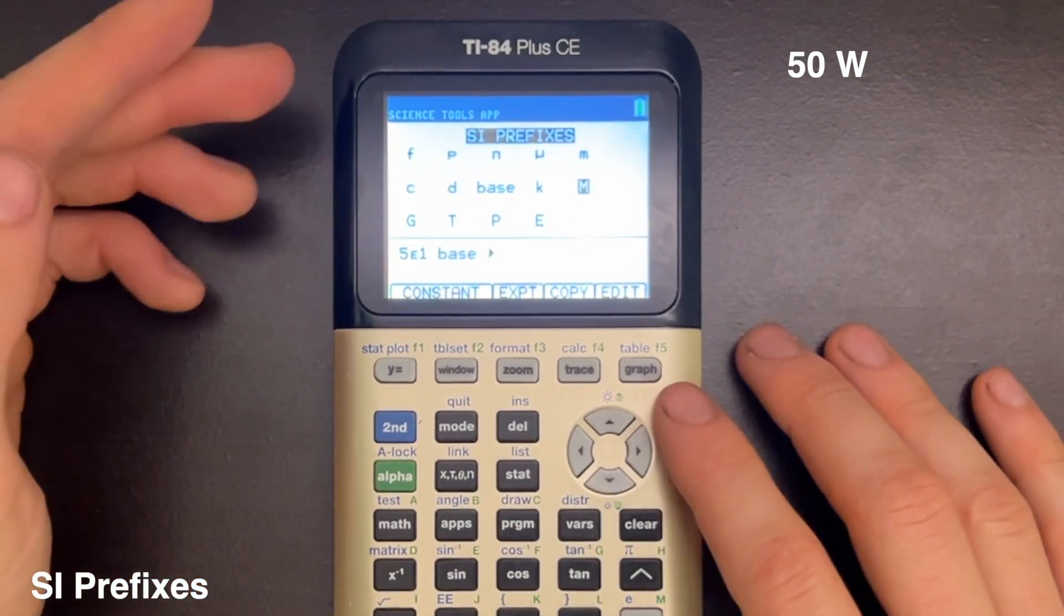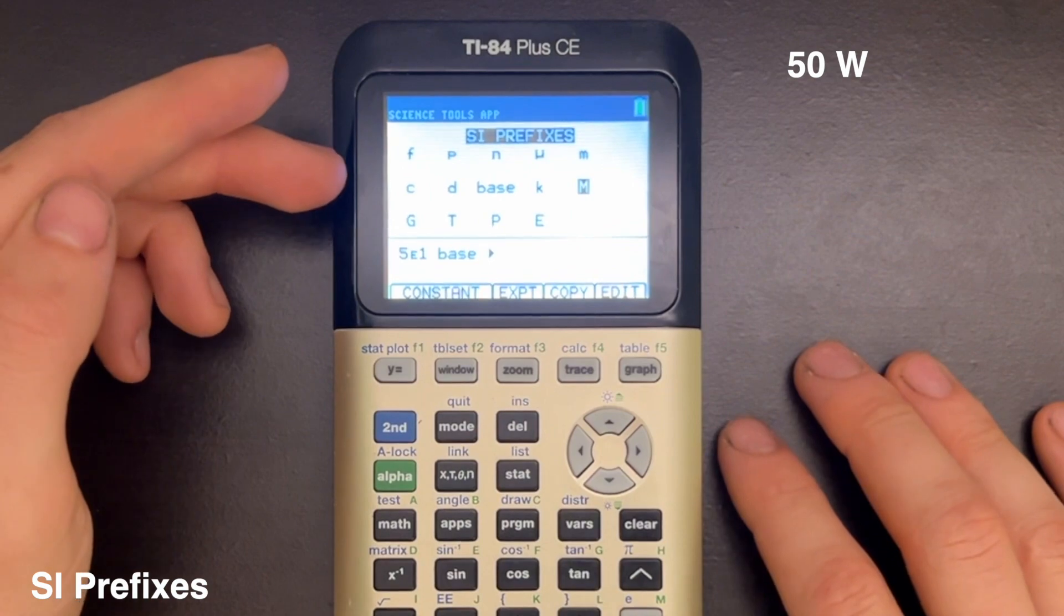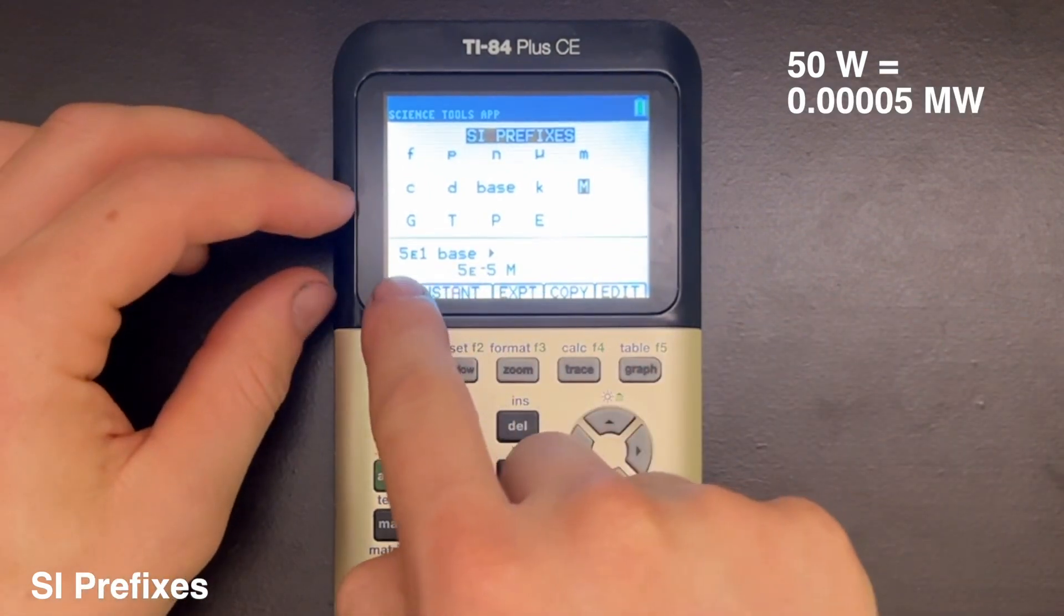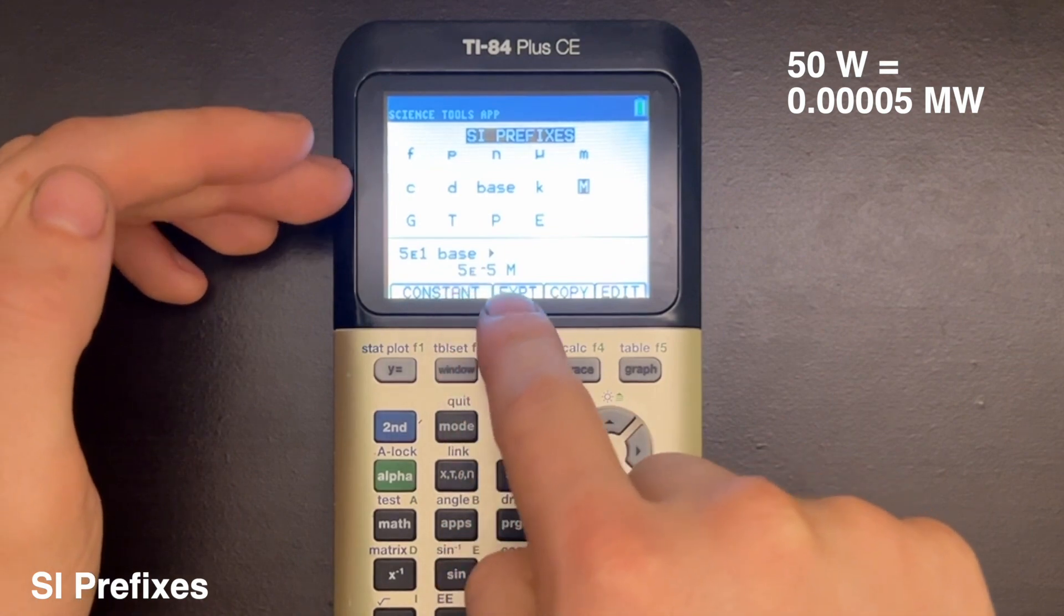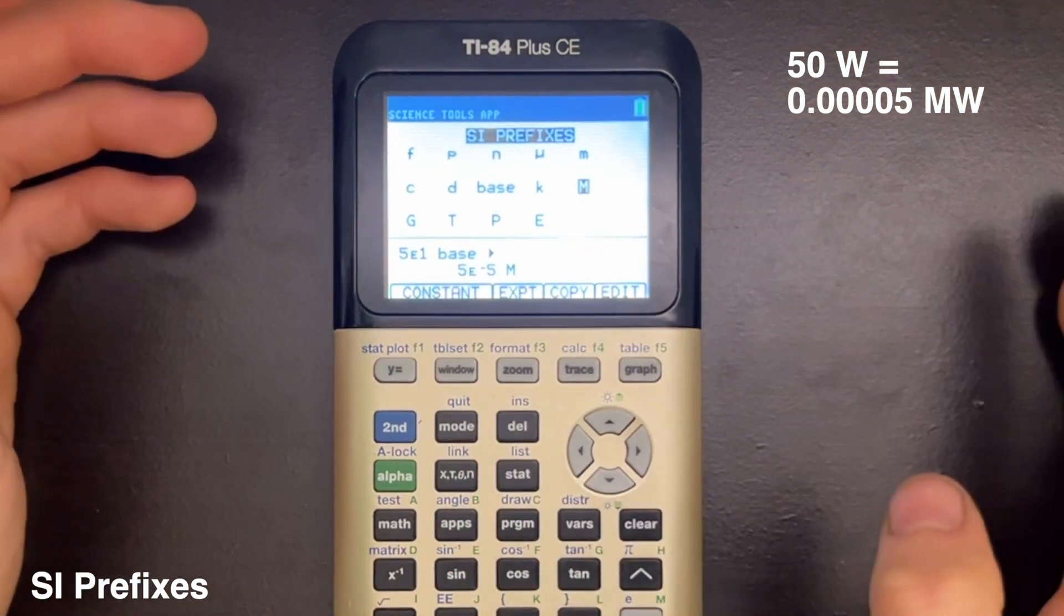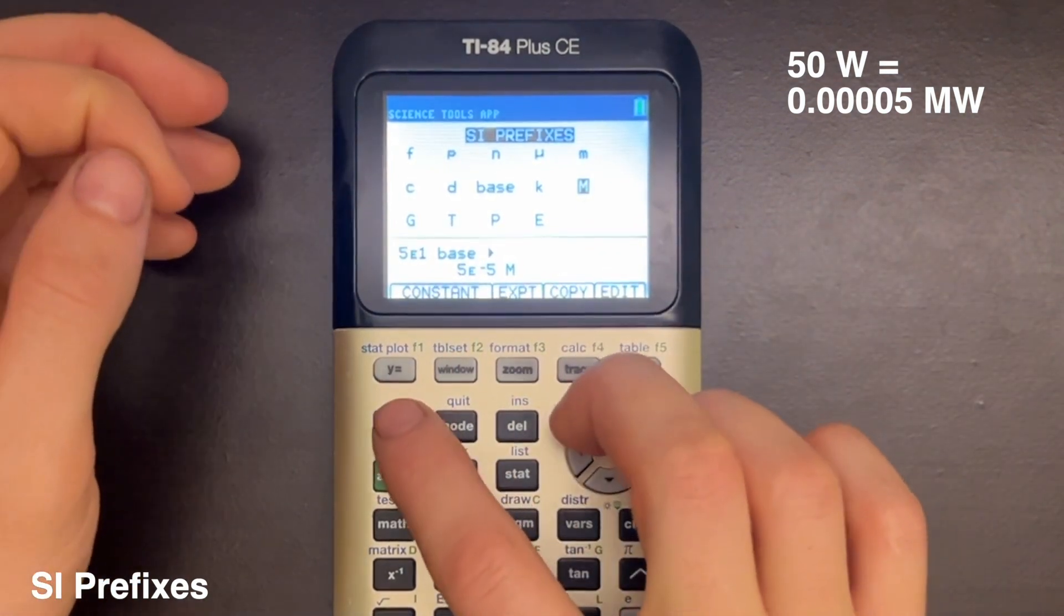And then if I want that in megawatts, I would scroll over to M and press Enter. And it would tell me that 5 times 10 to the 1 watts is 5 times 10 to the negative 5 megawatts. So that's how you would use the SI prefixes function.